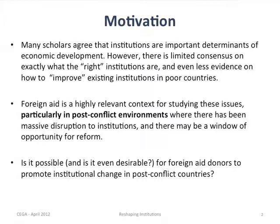Post-conflict settings are settings where institutions could matter a lot. During wartime, there are many changes in institutions — institutions are destroyed, there are disruptions in politics. Post-conflict periods are also potentially special windows of opportunity for institutional reform or transformation, where new compromises, new deals, new reforms might be implemented. The question we'll hone in on is the role that the donor community or external aid could play in this process of institutional transformation.